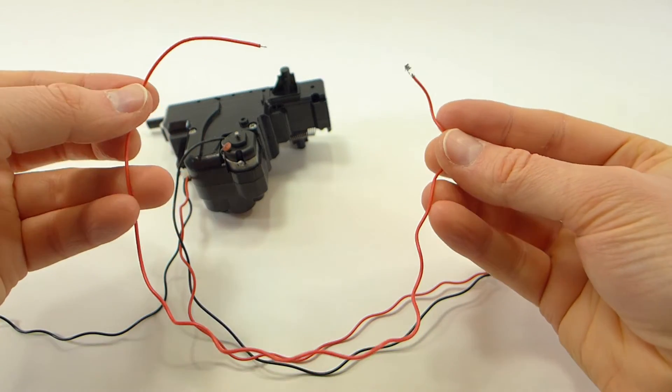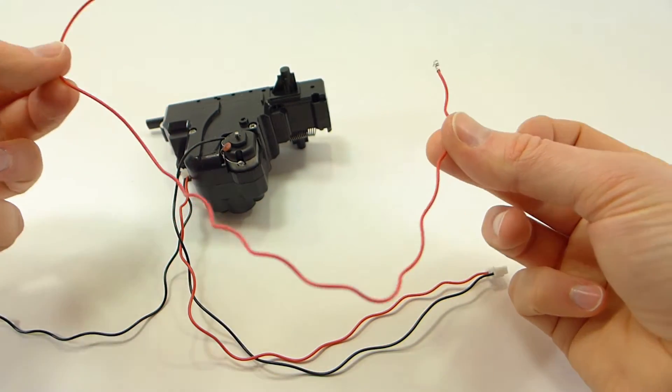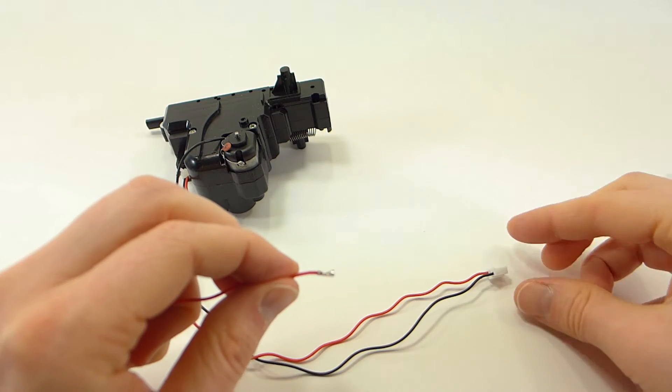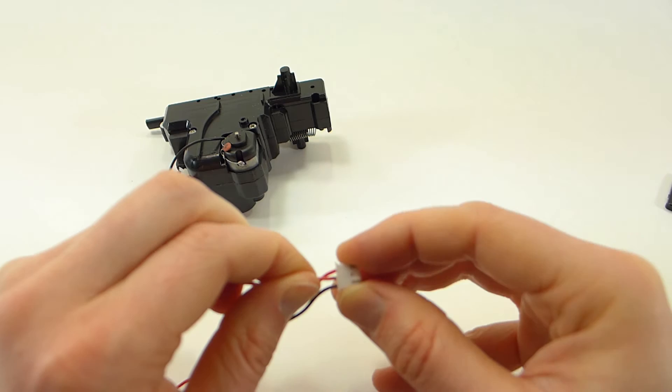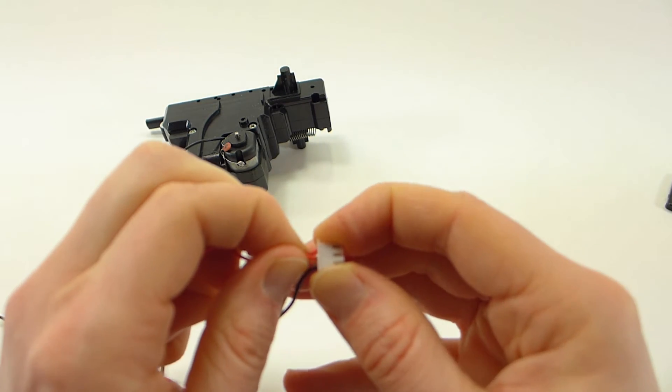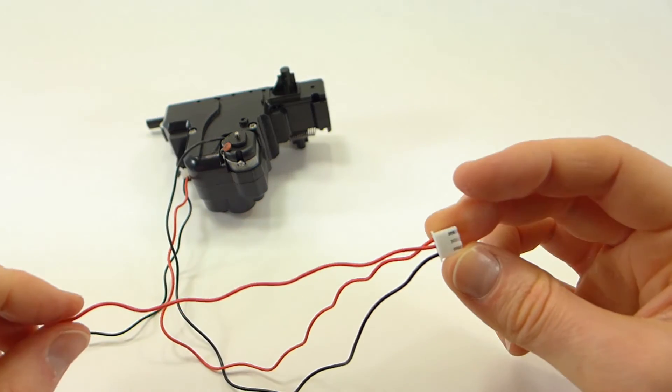Finally we're going to take the extra red wire that we had left over from before and we're going to plug it into the middle position of our three-pin plug, then we will solder the other end to the motor positive terminal.